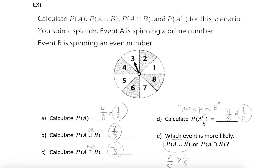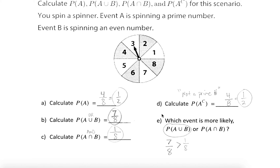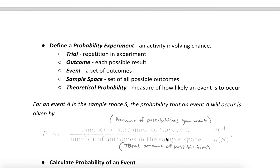One more: what's the probability of the complement of event A — not spinning a prime number? How many options are there? Well, 1 is not prime, 4 is not prime, 6 isn't prime, and 8 is not prime — so four chances out of eight, which is again one half, 0.5, or a 50% chance. Sometimes we have questions like which event is more likely, and that's just comparing ratios or percentages to see which is greater. Obviously the union is more likely to happen than the intersection — a lot more opportunity to spin a prime or even number than just a prime and even together. So there's an introduction into probability and a little bit of set notation.